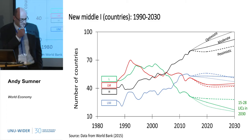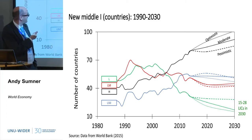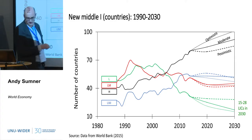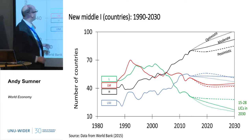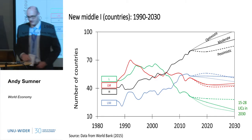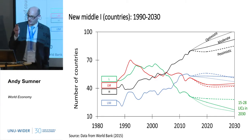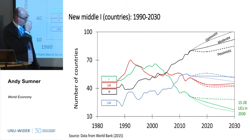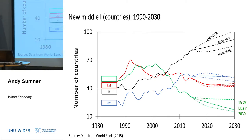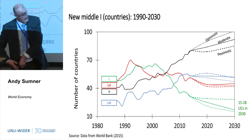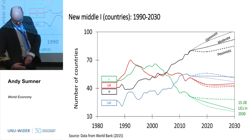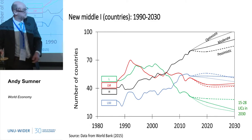Just to give you a sense of the countries: green is low income, red is lower middle income, blue is upper middle income, and black is high income. The important thing is that the number of countries at the bottom has in general fallen as countries have moved into the middle.